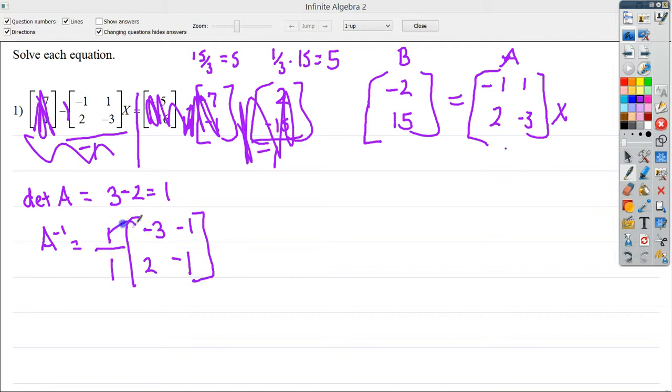And because everything's being multiplied by 1, my final answer for my inverse is negative 3. I don't know why I didn't change the sign. Negative 2, negative 1, and negative 1. So that is my inverse of A.